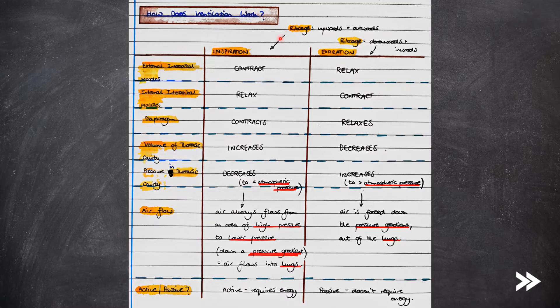In inspiration, the external intercostal muscles contract, the internal intercostal muscles relax, and the diaphragm contracts. Therefore, the volume of the thoracic cavity increases and the pressure in the thoracic cavity decreases to below atmospheric pressure. Because air always flows from an area of high pressure to an area of low pressure down a pressure gradient, air flows into the lungs. Note that this is an active process, meaning that energy is required. During inspiration, the ribcage moves upwards and outwards.